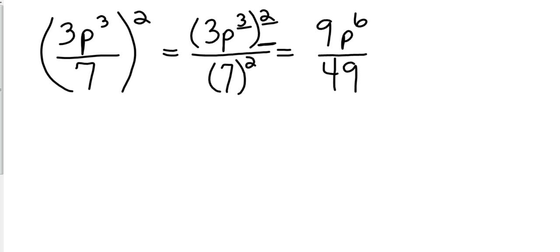Now at this point, if I could reduce anything, I would. If there was something that went into 9 and into 49, I would reduce it. So I'm looking for 3s, 9s, and none of those seem to be the case. So that's going to be where I end with 9p to the 6th power over 49.